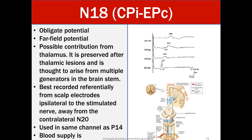N18 (CPI to EPC) is also an obligate peak according to the ACNS, which comes from the diagnostic world — both ACNS and ASNM are referenced for CNIM. N18 is a far-field potential with possible thalamic contribution, but it is preserved after thalamic lesions and is thought to arise from multiple brainstem generators. It is best recorded referentially from the scalp electrode ipsilateral to the stimulated nerve, away from the contralateral N20, used in the same channel as P14.